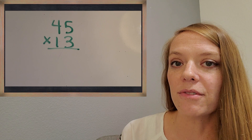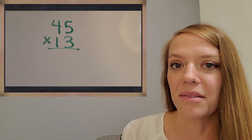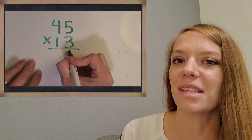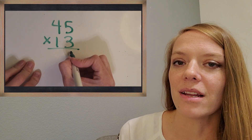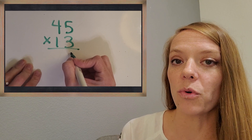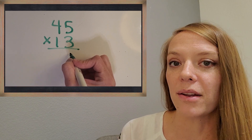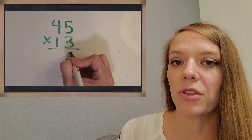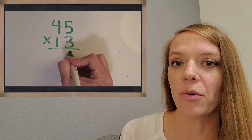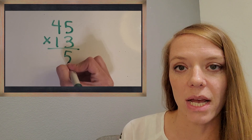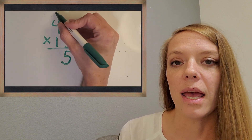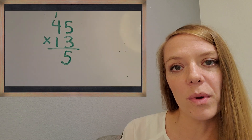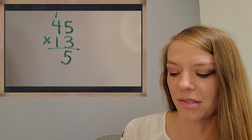So what is five times three? Awesome, 15. You're going to write it down just like you would if you were doing the addition algorithm. You're going to write the five down in the ones place and put that one over with the tens where it belongs.